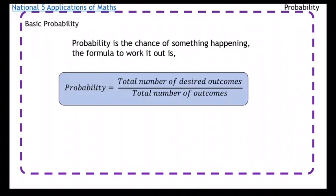The formula is probability is the total number of desired outcomes over the total number of outcomes. Just remember that over, it stands for divide. So let's look at a couple of basic examples of probability.